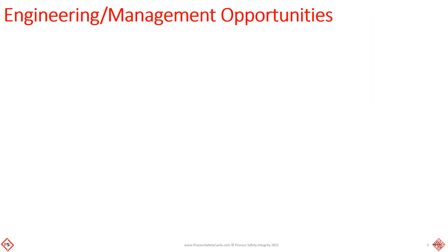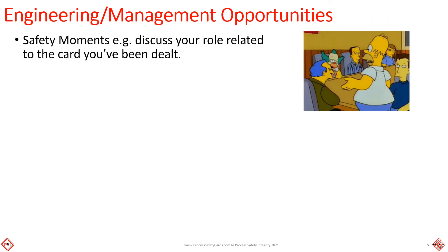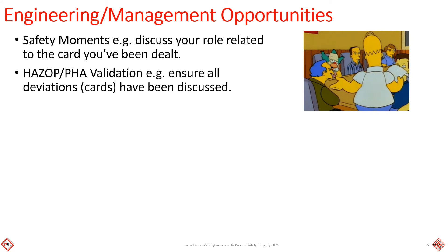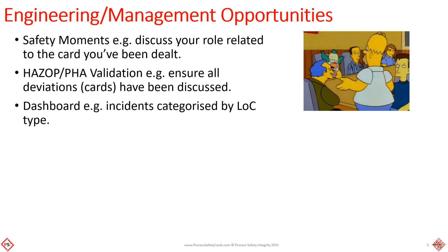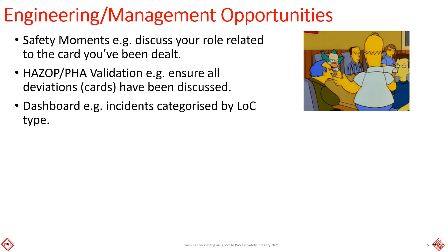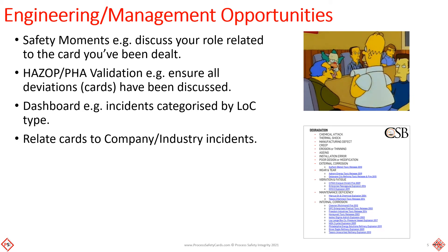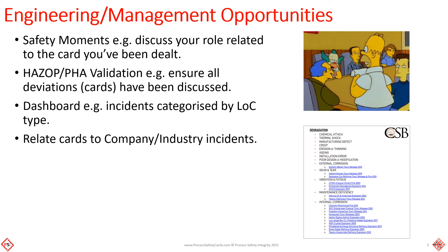Engineering or management opportunities include safety moments — for example, discuss your role related to the card you've been dealt. Process hazard analysis validation — for example, ensure all deviations or cards have been discussed. Performance dashboards — for example, incidents are categorized by loss of containment or card type. Relate cards to company or industry incidents — for example, relevant CSB investigations.